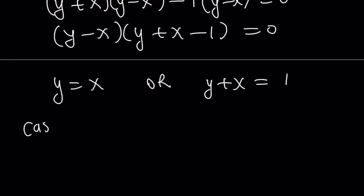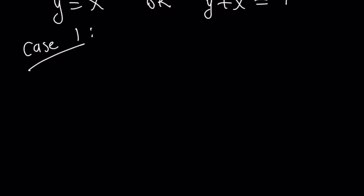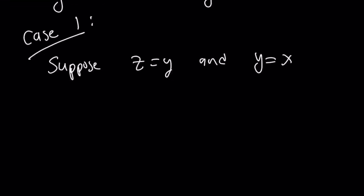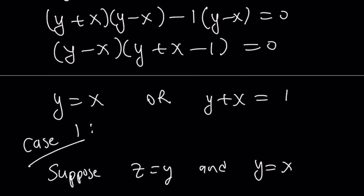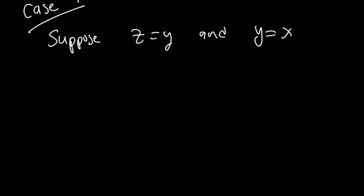Case number one. Suppose z equals y and y equals x. So, I'm kind of getting the first statements from each scenario. That means z is equal to y, but y is equal to x. So, they're all equal. This means x equals y equals z. So, I can replace all the variables with x then.